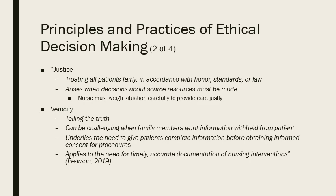Justice is treating all patients fairly in accordance with honor, standards, and laws. It arises when decisions about scarce resources must be made — nurses must weigh situations carefully and provide care justly. This happened recently with COVID, where they had to decide who got the ventilators. That's an ethical decision where justice must be served fairly for each patient. Veracity means telling the truth, which can be challenging when family members want information withheld from patients. It also underlies the need to give patients complete information before obtaining informed consent, and applies to timely and accurate documentation of nursing interventions.